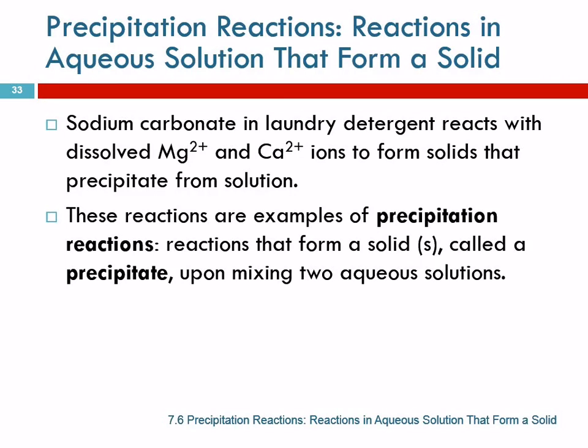Precipitation reactions—this is the sort of reaction we talked about with laundry detergent. Sodium carbonate will remove dissolved magnesium and calcium ions by forming solids that precipitate from solution. In terms of weather you might see on television, what is precipitation? Rain, snow, sleet, hail—it's stuff falling from the sky, right? But not airplane parts.